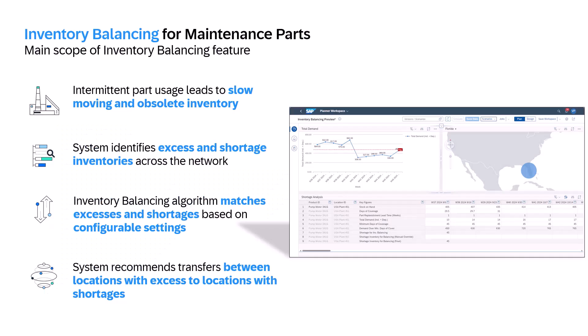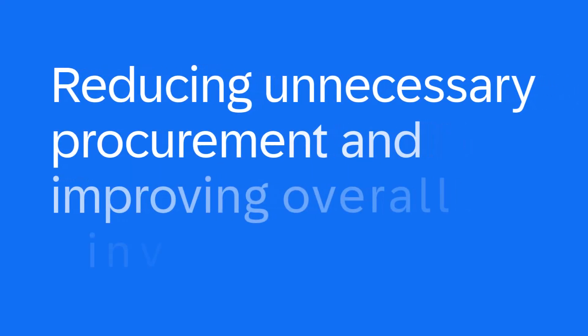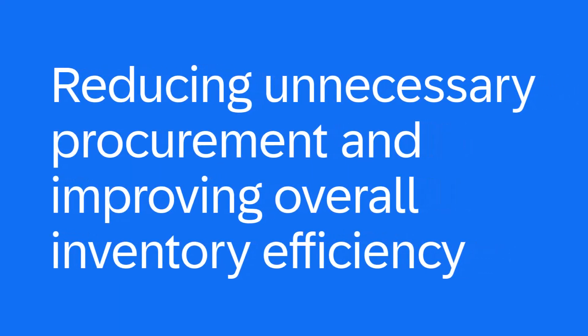With the SAP IBP 2505 release, we introduced the MRO Inventory Balancing Operator to improve inventory planning in maintenance environments. Intermittent part usage often results in stranded inventory across locations, increasing part obsolescence. This new operator enables planners to efficiently redistribute excess stock across the network, reducing unnecessary procurement and improving overall inventory efficiency.